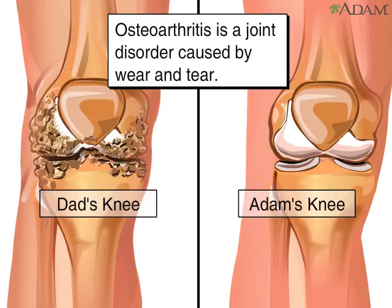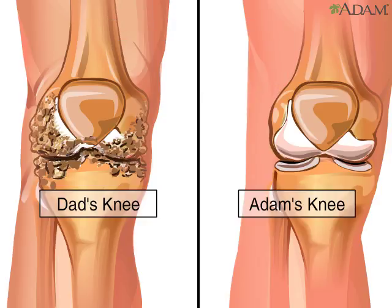Osteoarthritis is a chronic disease — a disease that persists for a long time. It causes the deterioration of the cartilage within a joint. For most people, the cause of osteoarthritis is unknown, but metabolic, genetic, chemical, and mechanical factors play a role in its development.